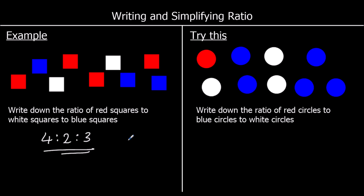One for you to try, so give this a go. We're writing down the ratio of red circles to blue circles to white circles. So red comes first. We've got one red circle, five blue circles, and three white circles. So the ratio is 1 to 5 to 3 — red first, then blue, then white.